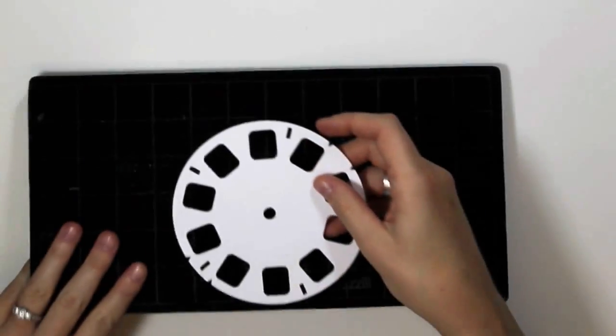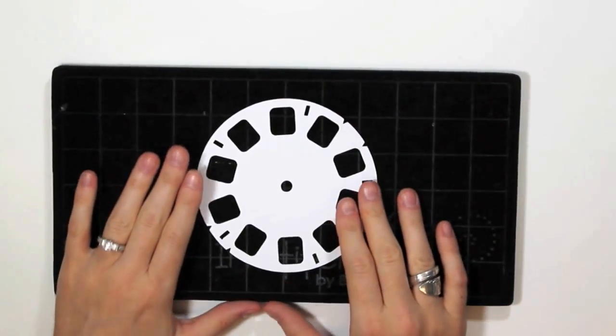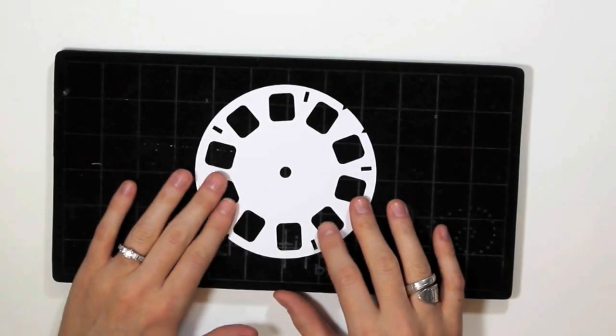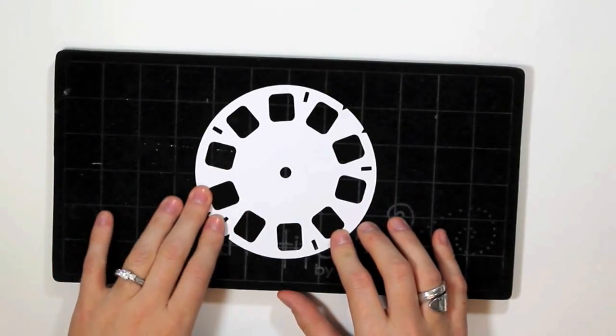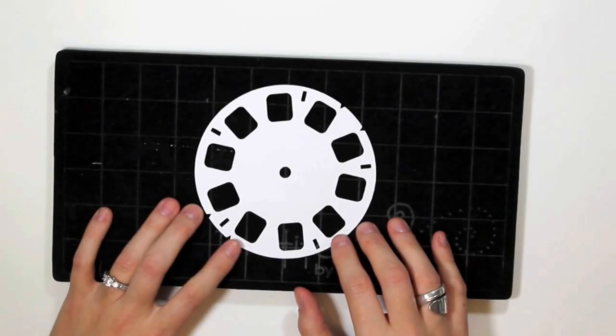If you were a child in the 80s like I was, this viewmaster shape probably brings back quite a few memories. I cut this out using my Silhouette, but you could also cut something similar using a circle die and an exacto knife.